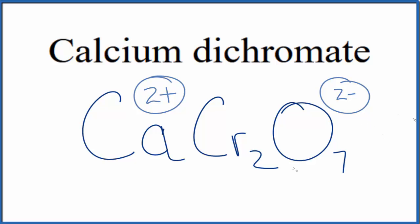So this is the formula for calcium dichromate, CaCr2O7. We have calcium, and then we have the dichromate ion. This is Dr. B, and thanks for watching.